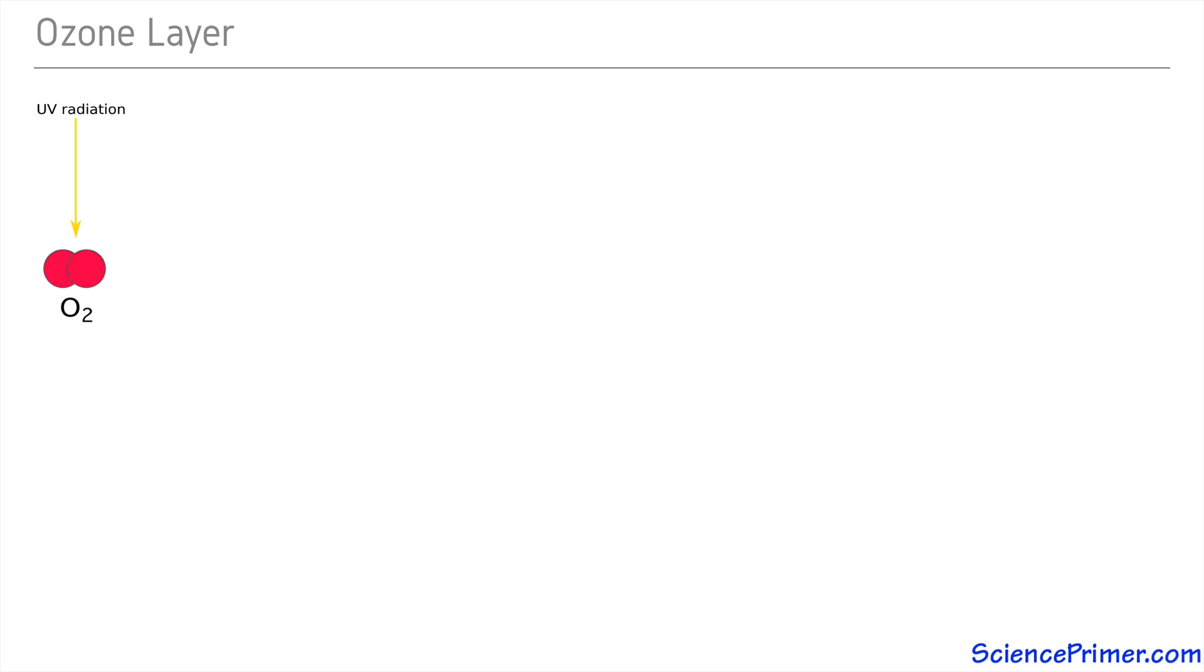This is ionizing radiation, so it has enough energy to split oxygen molecules into individual oxygen atoms, resulting in the formation of two highly reactive oxygen ions.